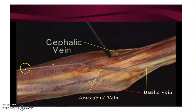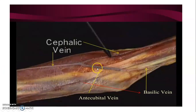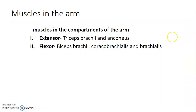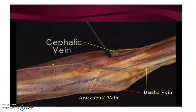The axillary vein originates at the inferior border of teres major as a union between the basilic vein and the brachial vein. The cephalic vein runs on the lateral aspect and the basilic vein on the medial aspect, communicating antecubitally.